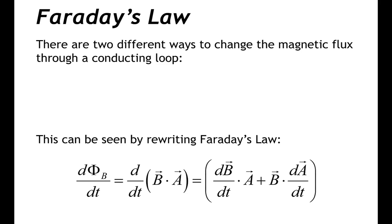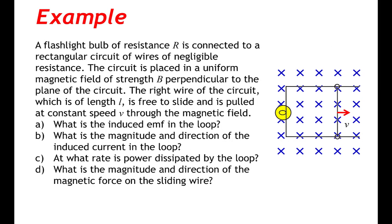Let's apply Faraday's law with the following example. A flashlight bulb of resistance R is connected to a rectangular circuit of wires of negligible resistance. The circuit is placed in a uniform magnetic field of strength B perpendicular to the plane of the circuit. The right wire of the circuit, which is of length L, is free to slide and is pulled at constant speed V through the magnetic field. We need to find: the induced EMF in the loop, the magnitude and direction of the induced current, the rate at which power is dissipated, and the magnitude and direction of the magnetic force on the sliding wire.